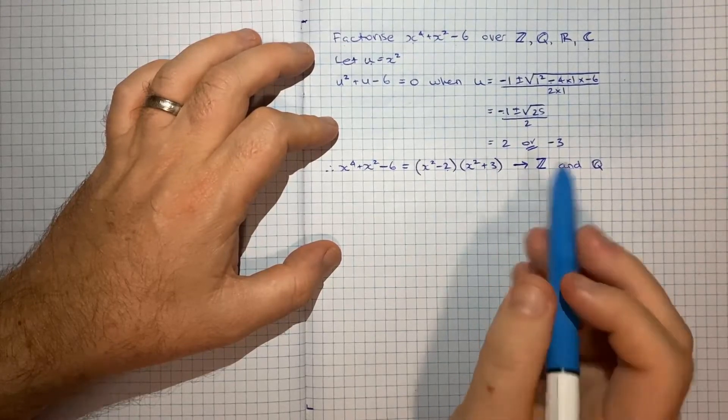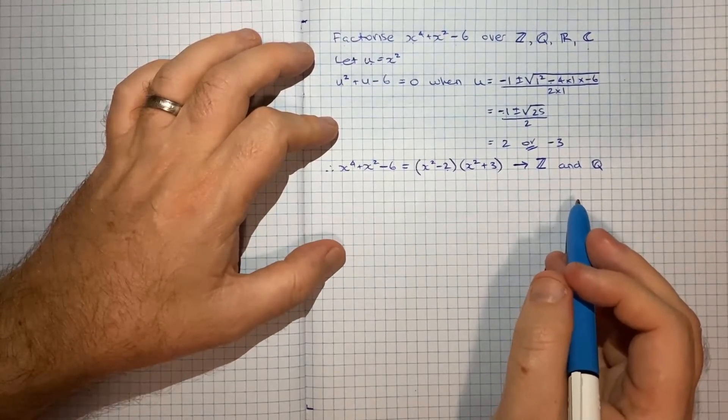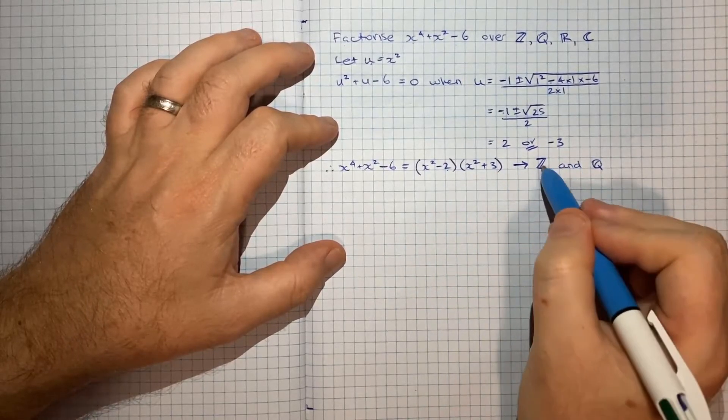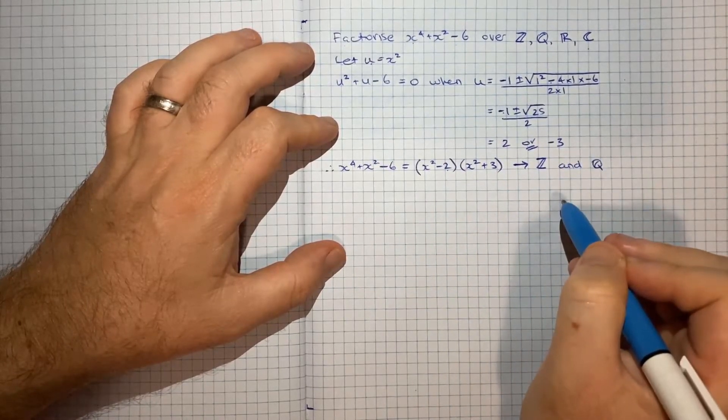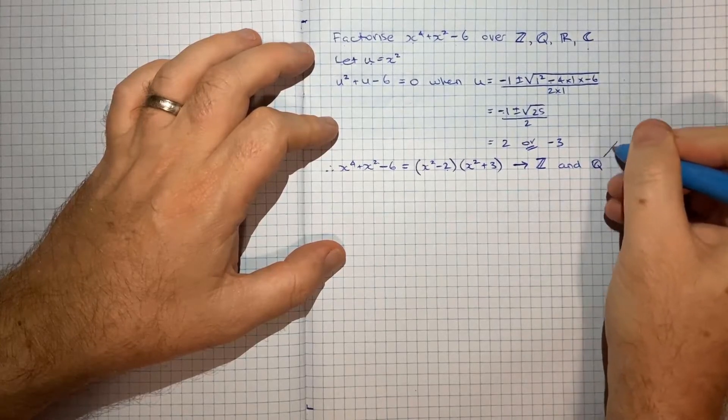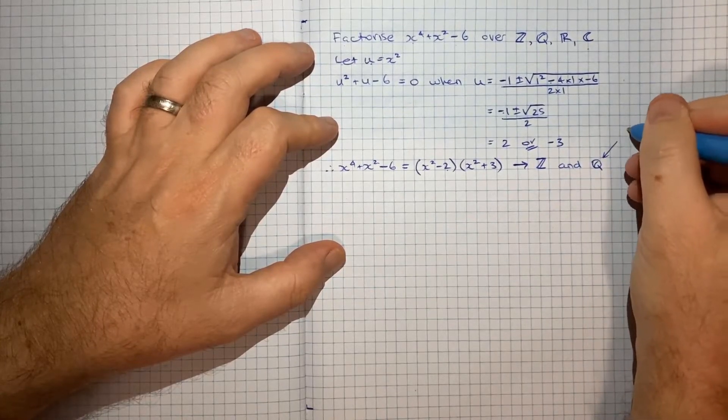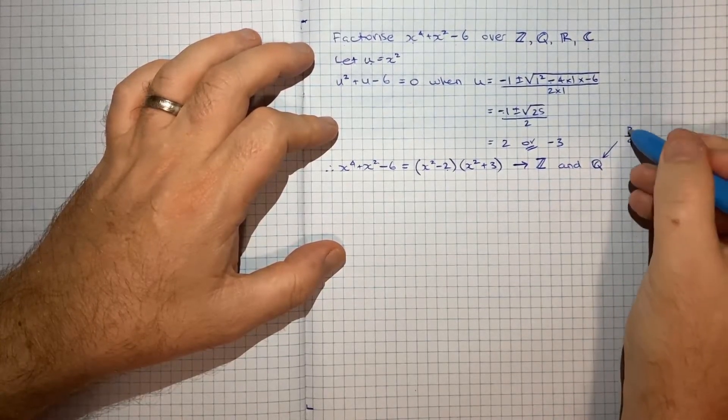So it may be that I'm missing something in this question, but I think this first factorisation covers both the integers and the rational set.